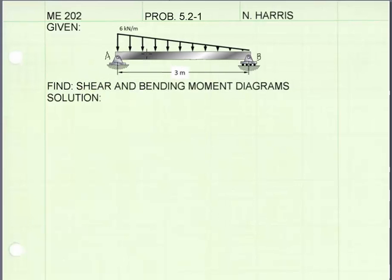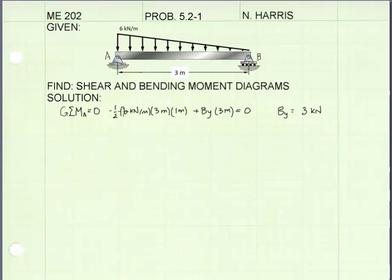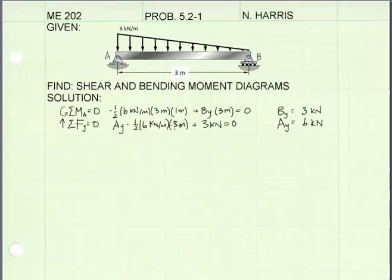I'm going to label this end of the beam as A and this end as B. At either end, we have a vertical reaction force, and I'm going to solve for those using the equations of static equilibrium. Summing the moments at A equal to zero, the resultant force of the distributed load times its moment arm — 1 meter from A, the centroid of the triangle — and the reaction force at B times its moment arm of 3 meters gives us B equal to 3 kilonewtons. Summing forces in the y direction, we get the reaction at A equal to 6 kilonewtons.